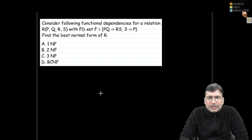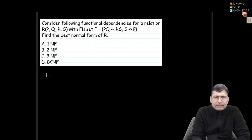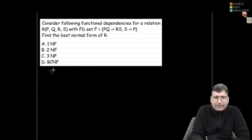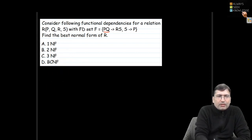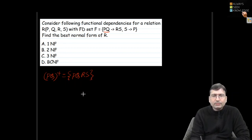Now consider a relation R with the given functional dependency set. Let's find the best normal form for R. For BCNF, whatever is on the left-hand side of a functional dependency (x→y) must be a super key. Let's check PQ: the closure of PQ gives us PQ and then RS, so the full set PQRS — PQ is a super key.